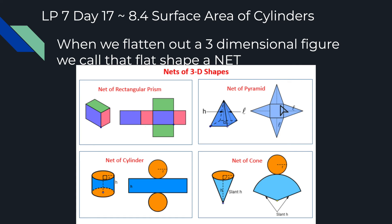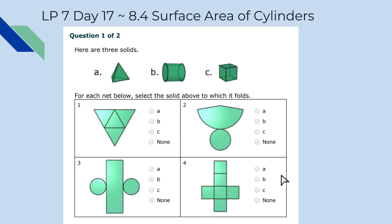For a cylinder — think of a can — if you cut straight down the side and unroll it, you get a rectangle plus two circles: the top and the bottom of the can. For a cone, if you cut straight down and unroll it, it's not a rectangle anymore — it becomes a partial circle shape. So we're just matching nets to their three-dimensional figures.